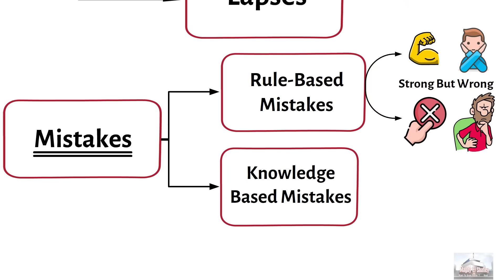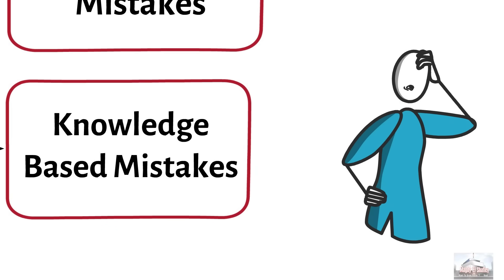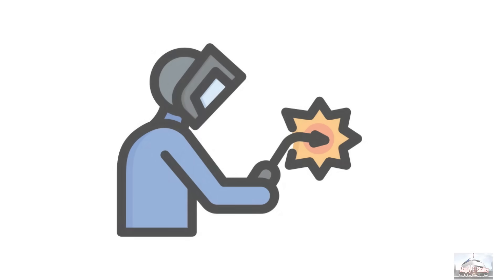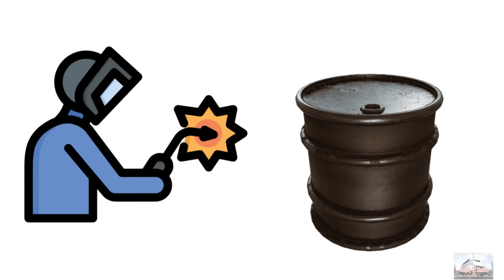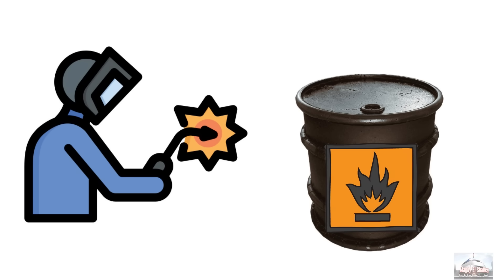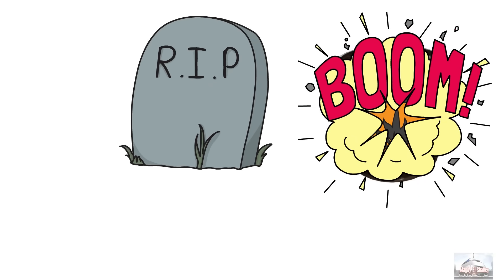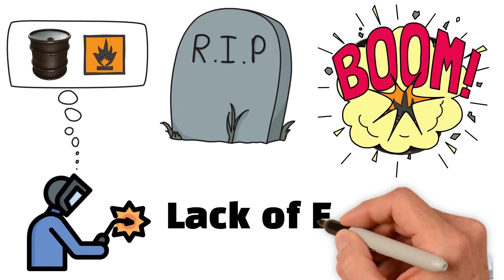The second type is knowledge-based mistakes. These occur when an individual faces a new, unfamiliar situation and must develop a plan or decision, and he doesn't have the sufficient knowledge or information. Example, a worker was tasked with removing the lid of a 45-gallon drum using a burning torch. He had not been told that the drum contained flammable residues. When heat was applied, the drum exploded, killing the worker. The worker lacked critical knowledge about the drum's contents, which led to the accident. This highlights a knowledge-based mistake, or what we call lack of expertise.